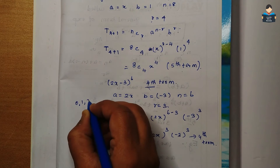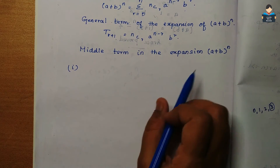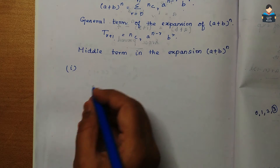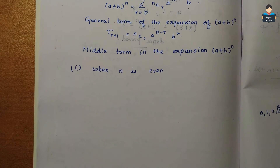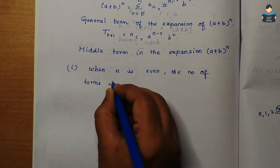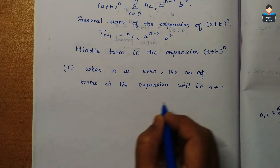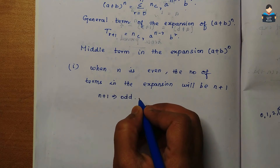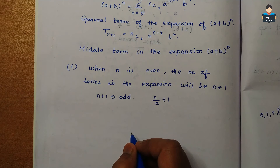Now the middle term in the expansion of (a + b)^n. When n is even, the number of terms in the expansion is n + 1, which will be odd. So the middle term is the (n/2 + 1)th term.